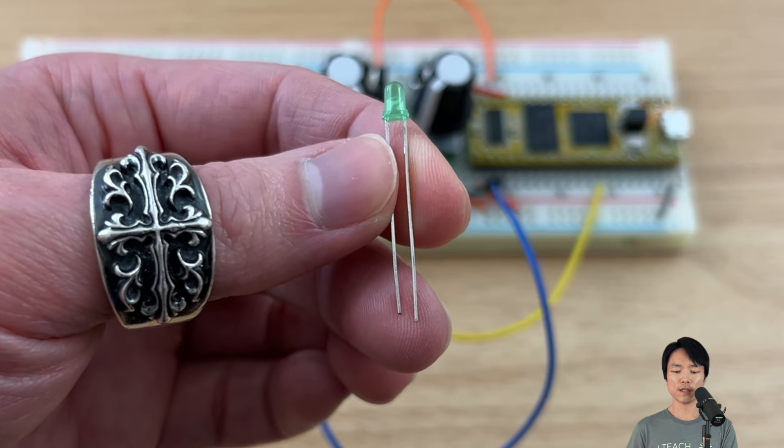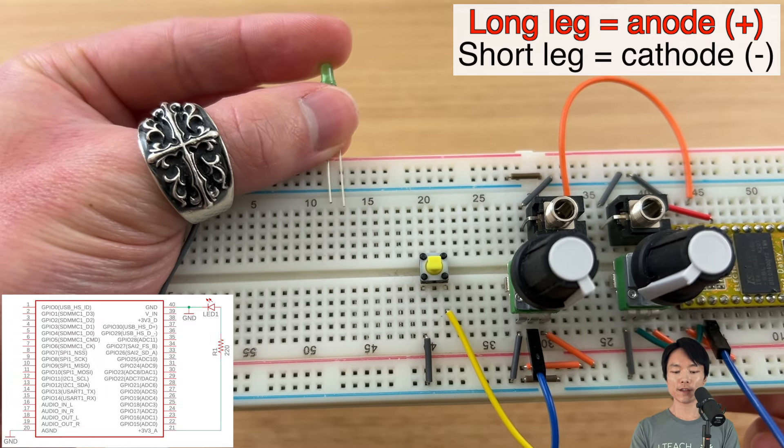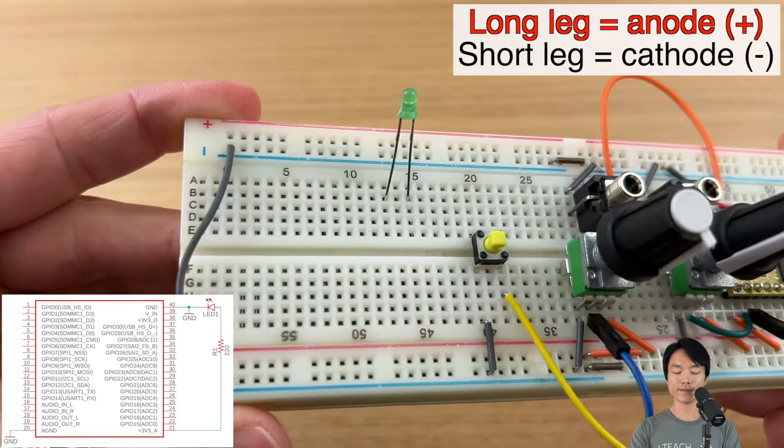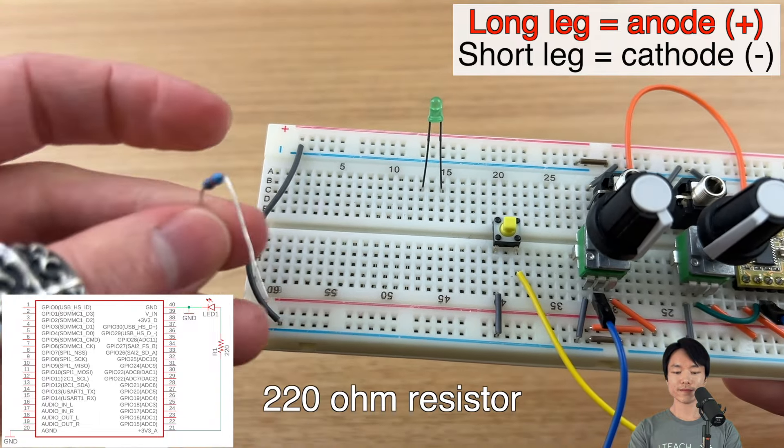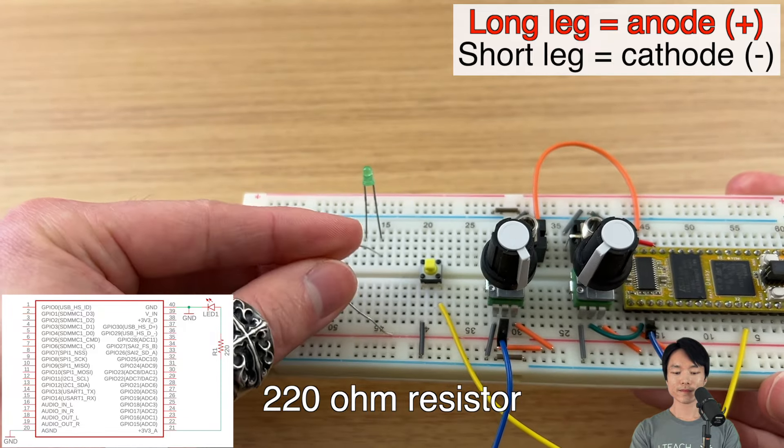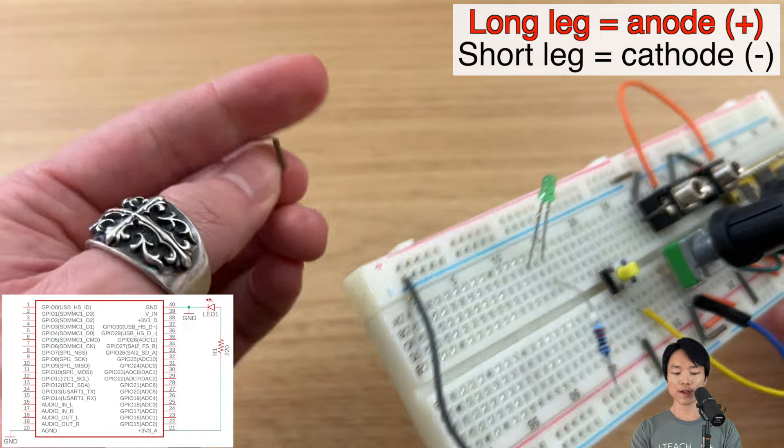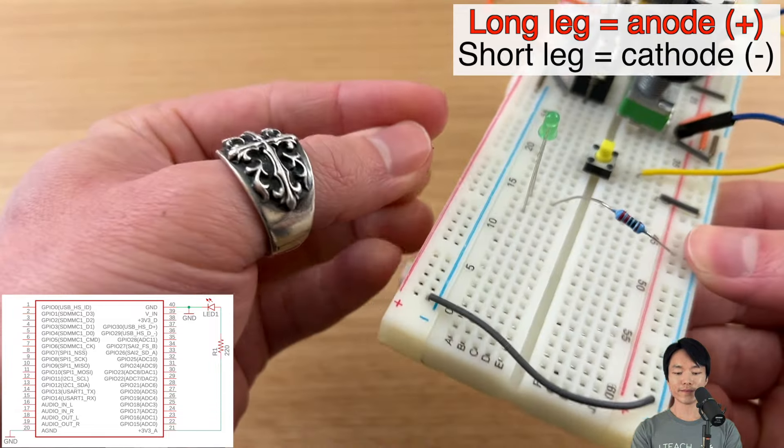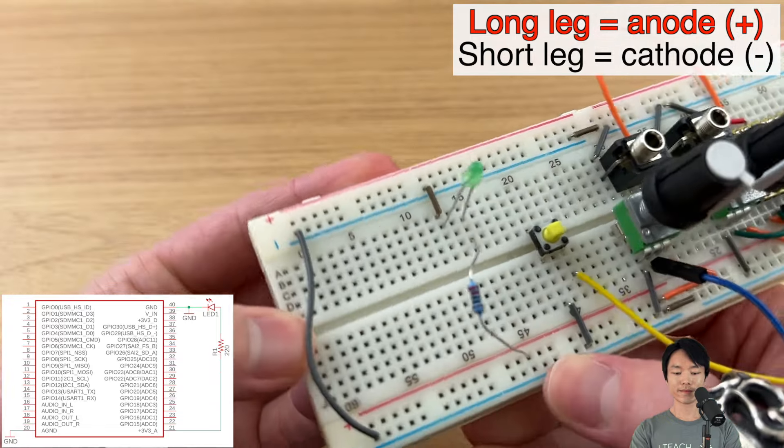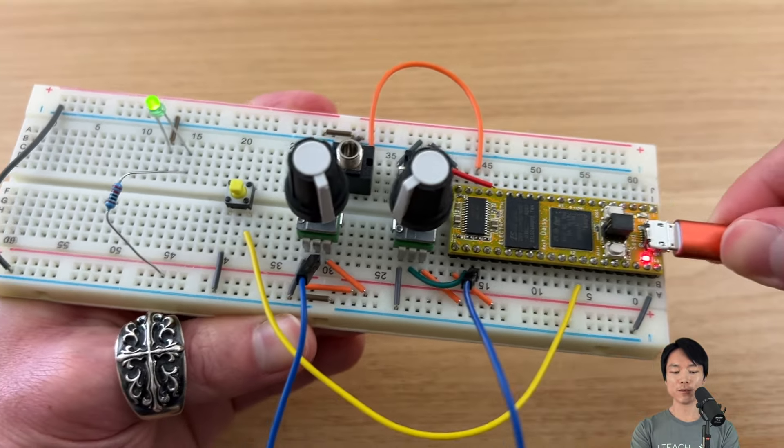If we look at the LED legs closer, we see that one leg is longer than the other. The direction that we insert the LED actually matters. So the long leg needs to be connected to the positive power rail with the resistor in between. And the short leg needs to be connected to the ground rail. And with the daisy powered on, we see the LED lighting up.